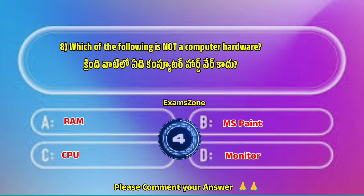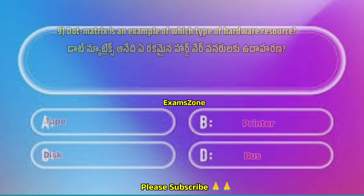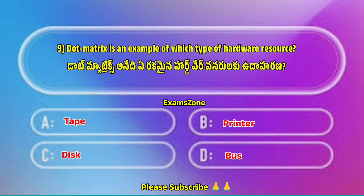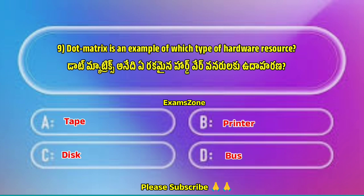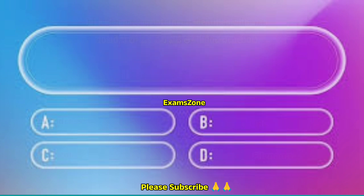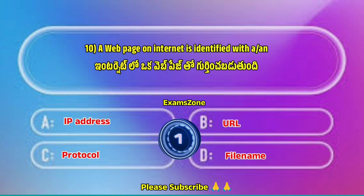Which of the following is not a computer hardware? MS Paint. Dot matrix is an example of which type of hardware resource? Printer. A web page on the internet is identified with URL.